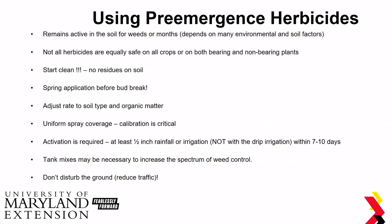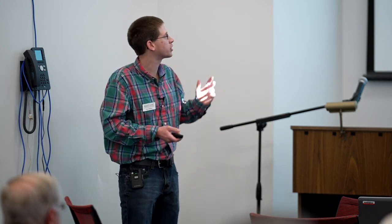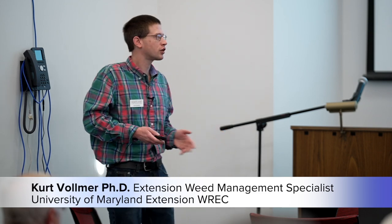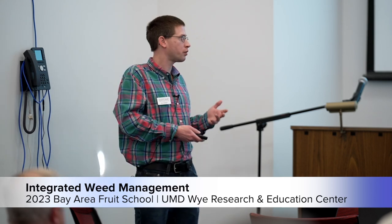Some tips for using pre-emergence herbicides: they remain active in the soil for months, and this activity depends on your soil type and environmental conditions. You might get rain to wash them into the treated zone, but too much rain could wash them out. Not all herbicides are going to be safe on all crops or on both bearing and non-bearing plants. Remember, you're not going to control emerged weeds — you need to start clean. Spring application before bud break, and adjust your rate based on soil conditions, pH, and organic matter. Make sure you have uniform spray coverage and your sprayer equipment is calibrated properly.